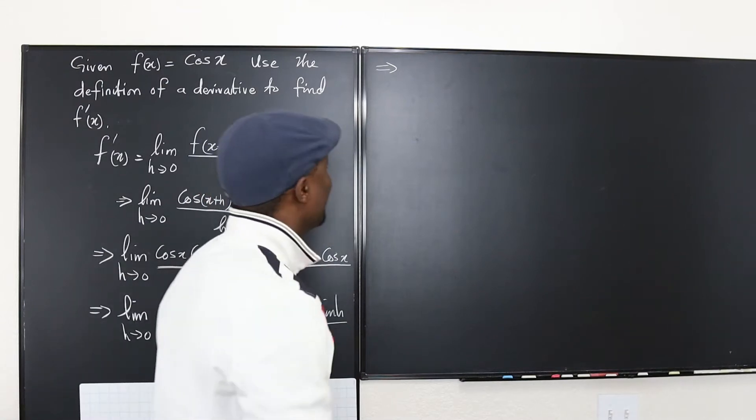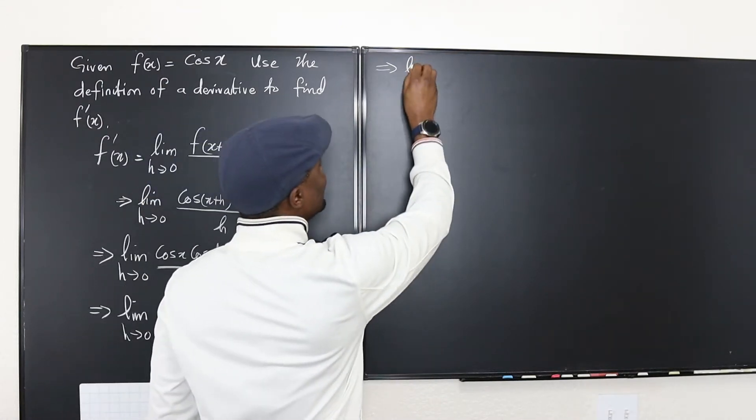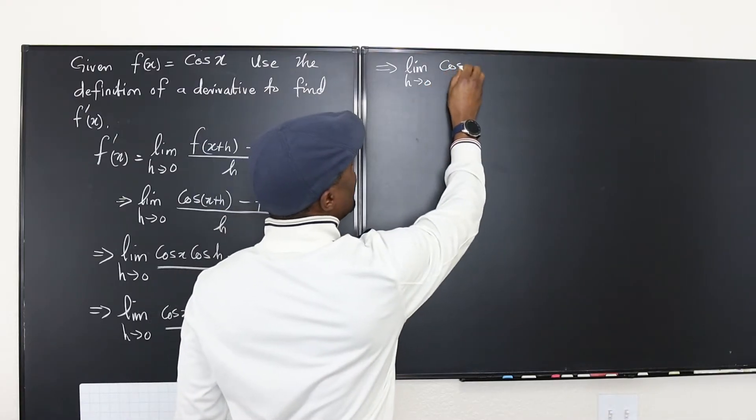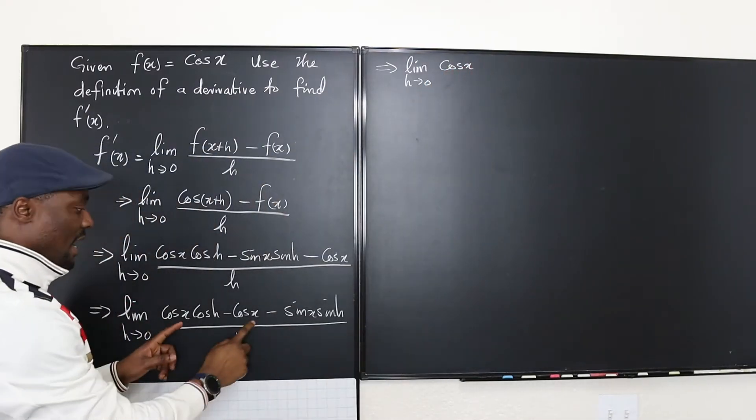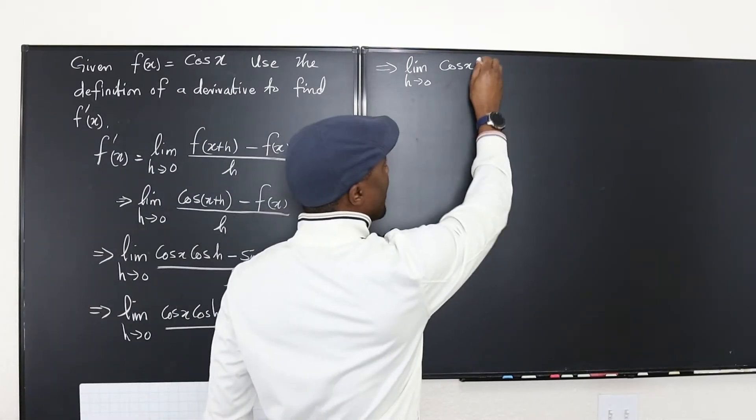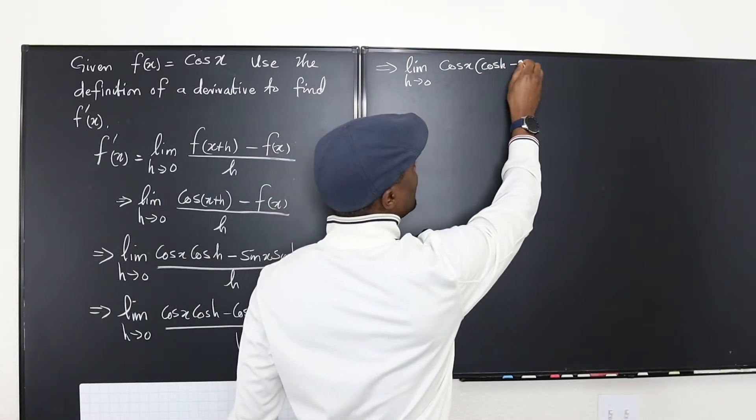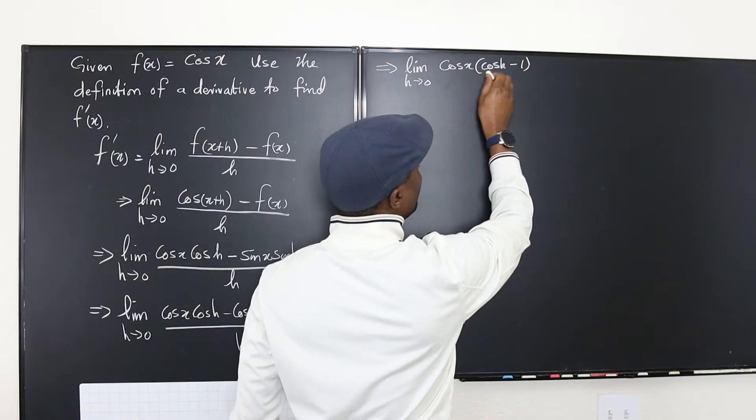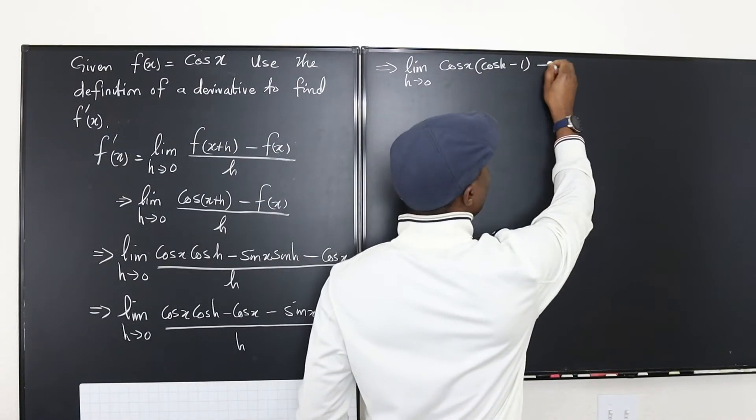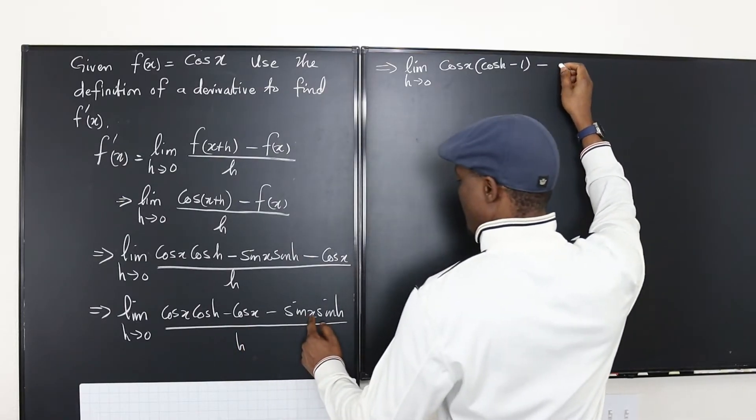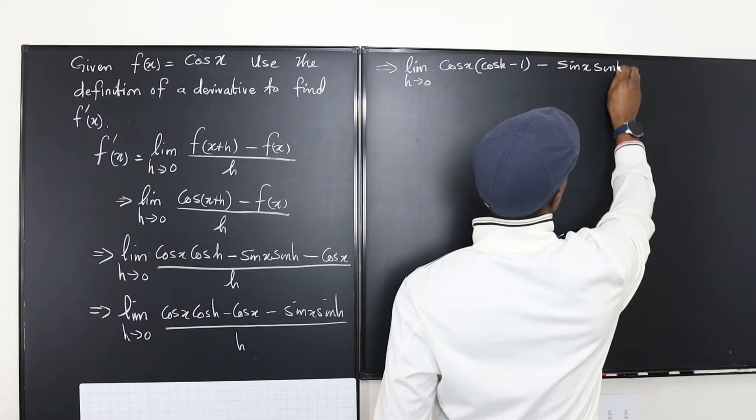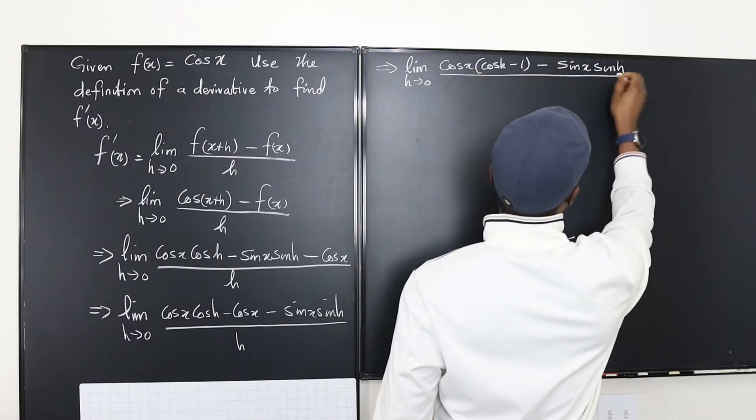Okay so this is gonna be the limit as h goes to zero of, so I'm factoring out cosine x and what's gonna be left will be cosine h minus 1. So I have cosine h minus 1. Then I have minus sine x sine h. All over h.